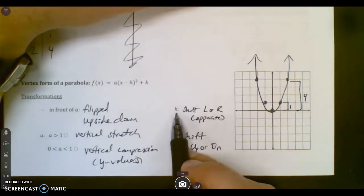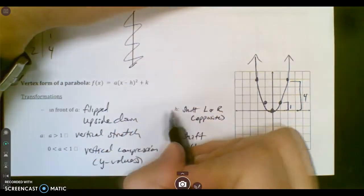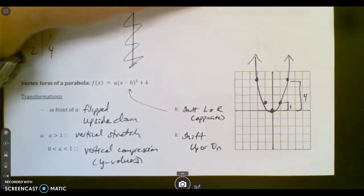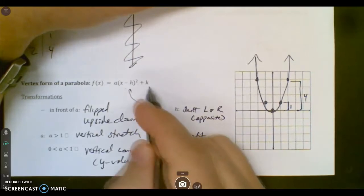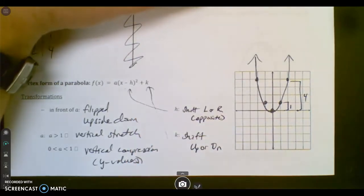This is shift left or right, that right there. And it's the opposite of what it looks like. If it's a minus, you'll go right. If it's a plus, you'll go left. And shift up or down is up here. And that one actually doesn't lie to you, so that actually tells the truth.